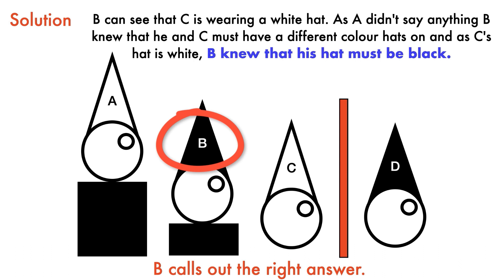Through this logical approach, prisoner B was able to answer with the right hat color and all four prisoners are freed.